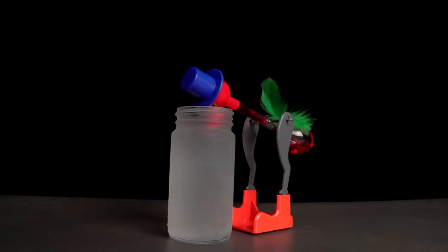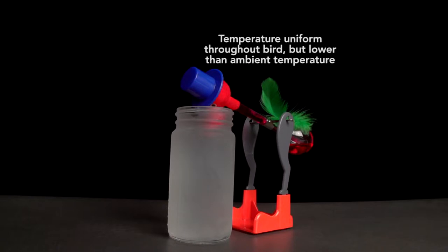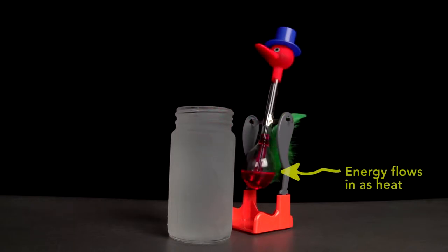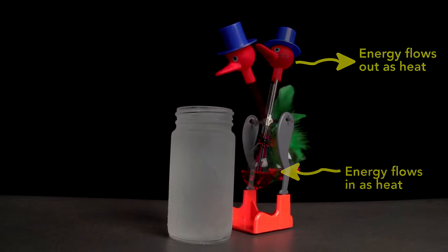Then, when it drinks, the pressure in the head and base start to equalize, so liquid returns to the base, but the overall temperature of the bird is now just a little below ambient temperature. When it returns to upright, the base draws in energy as heat, the head then rejects some energy as heat, and the bird drinks again.